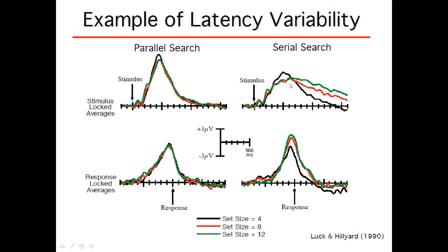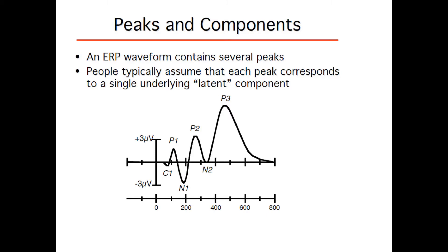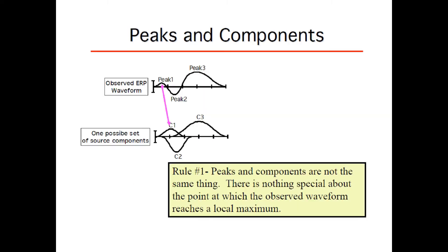So now the most interesting part. ERP waveform typically contains a number of peaks, which are called with letters and numbers: P1, P2, and so on. People typically assume that each peak corresponds to a single underlying latent component. Here you can see one as well, which is very small. This is a model indeed, what is shown here. And Steve Luck tries to illustrate how peaks don't correspond precisely to the component.